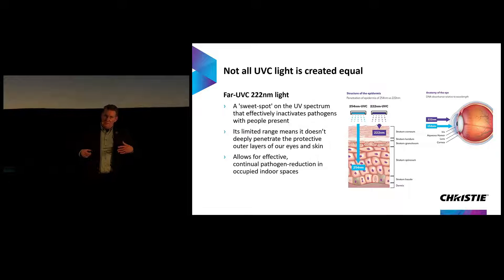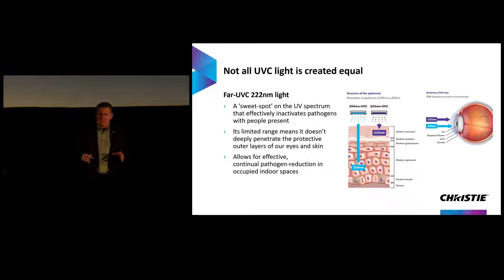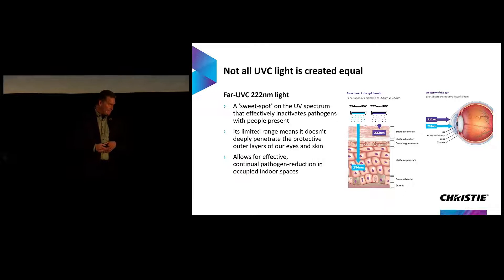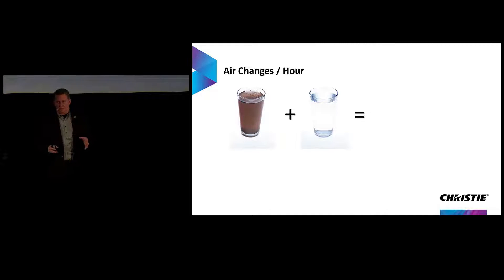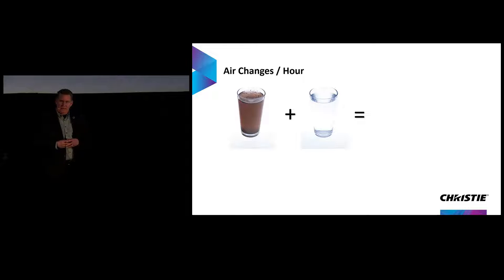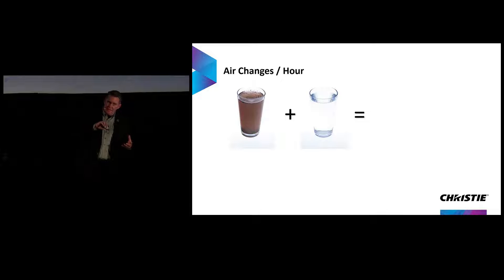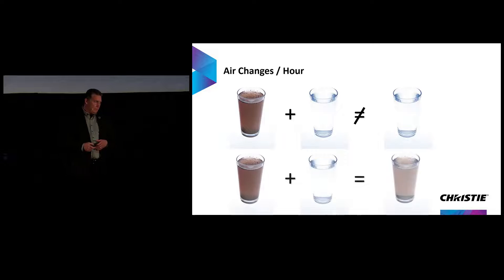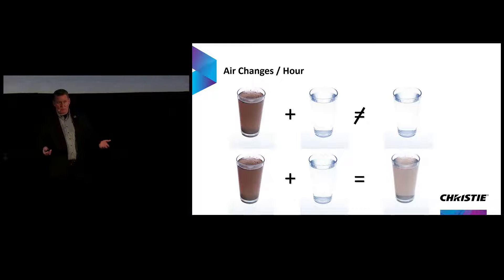This is fantastic — it enables UV light to be used in occupied spaces. No longer are we just disinfecting empty spaces; now we can be actively disinfecting spaces while people are there. So let's talk about air changes per hour. If we think of the dirty glass as our pathogen-laden room and the clean glass as one air change, when we take the clean water and dump it into the glass of dirty water, we don't end up with clean water — we end up with something less dirty. The same is true with a pathogen-laden space: when you add one air change, you typically see a concentration reduction of about 65%.